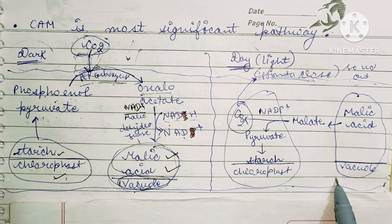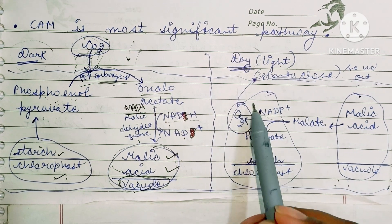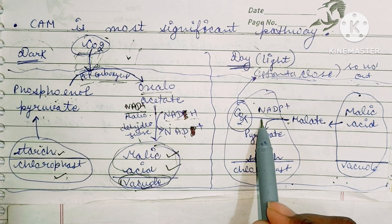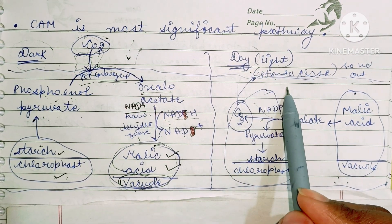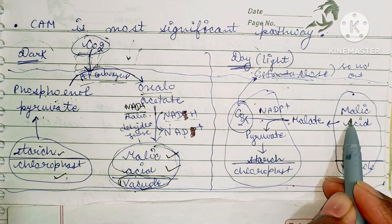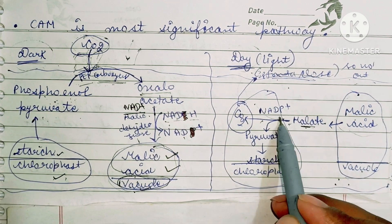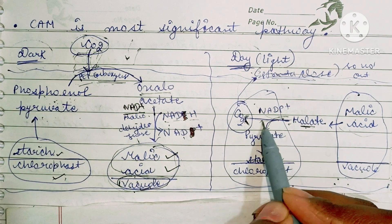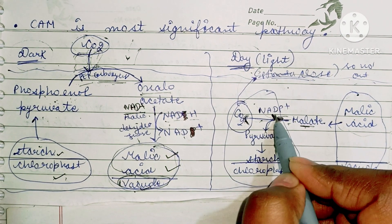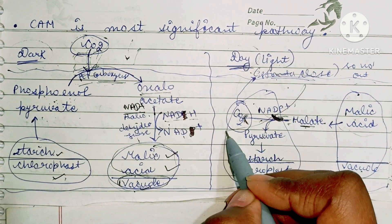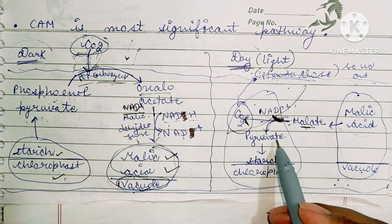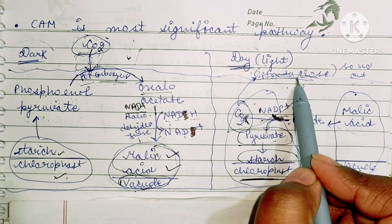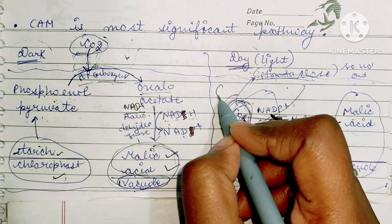During the daytime, when stomata are closed, decarboxylation occurs. The malic acid stored in vacuoles converts into malate, and malate forms pyruvate — meanwhile, CO2 is eliminated via NADP+ malic enzyme and NADP is also released. Since the stomata are closed, CO2 and water cannot be lost. The pyruvate is stored back into the chloroplast, and the released CO2 enters the C3 cycle.